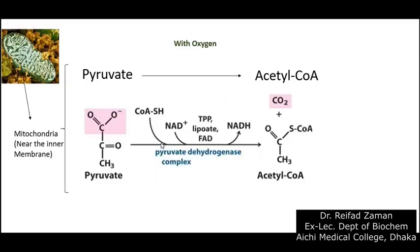So where does all this occur? Well, it takes place near the inner membrane of the mitochondria, right around here. The enzyme pyruvate dehydrogenase complex is attached to the inner wall of the mitochondria. And this particular reaction where pyruvate is converted to acetyl-CoA is called the link reaction. I hope that clears all your confusions. Do let me know if you have any questions in the comments below, and if you want me to cover any other topics, let me know that as well. Thank you.